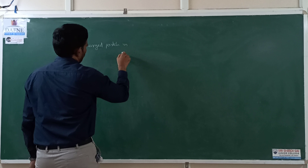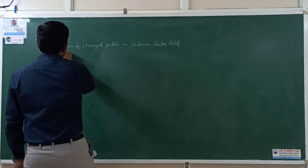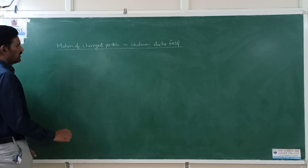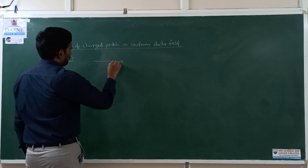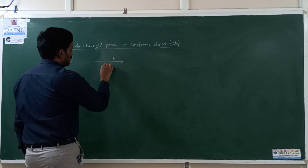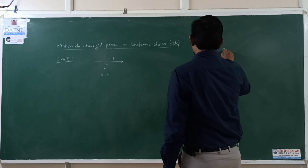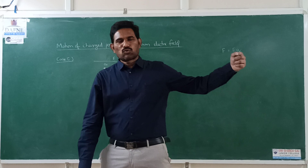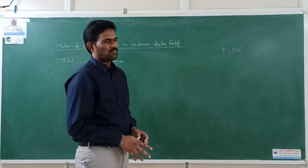Motion of a charged particle in a uniform electric field. We will discuss different cases. The first case is where the particle is just released in an electric field. Suppose a uniform electric field is present, and a charged particle is released from rest — its initial velocity is zero. A force F equal to EQ will act on the charge, and the direction of this force depends on Q.